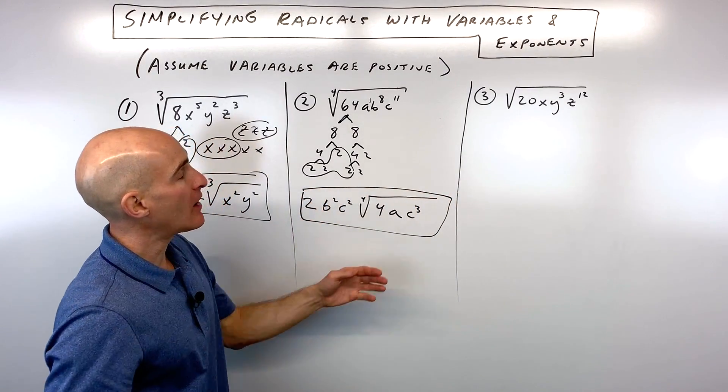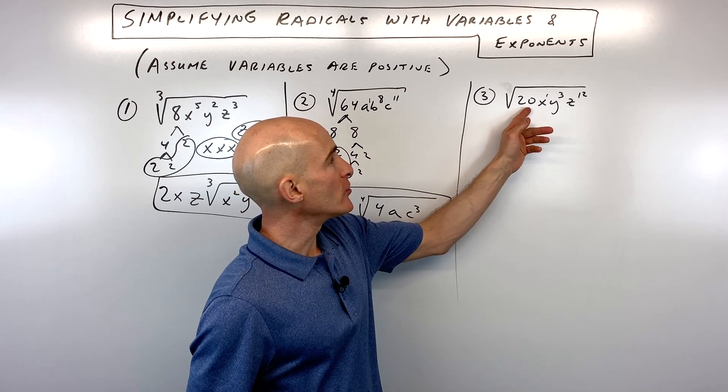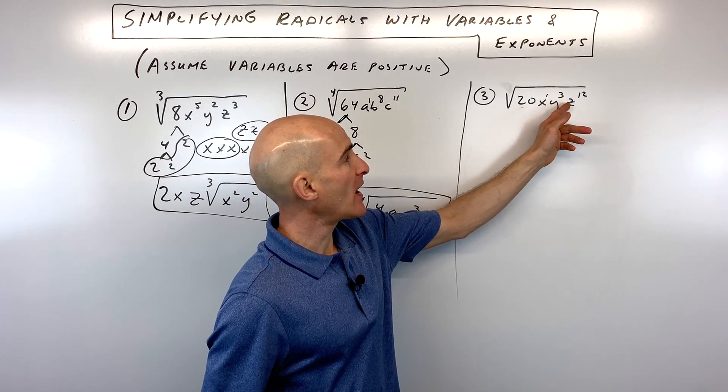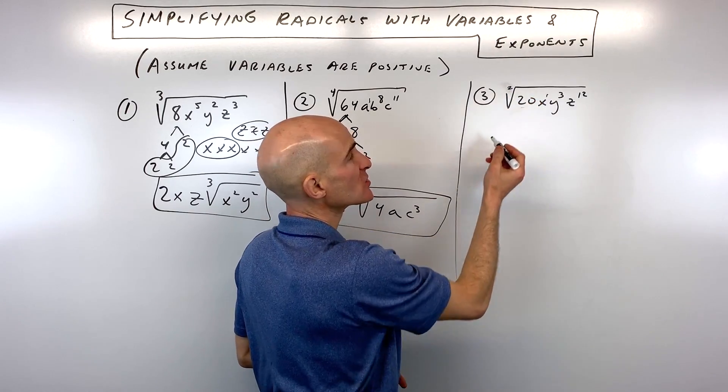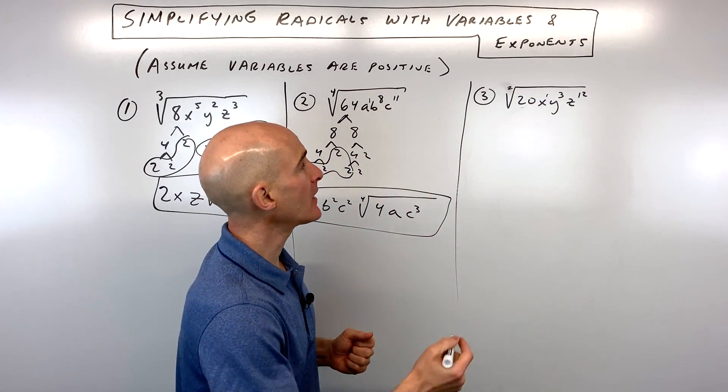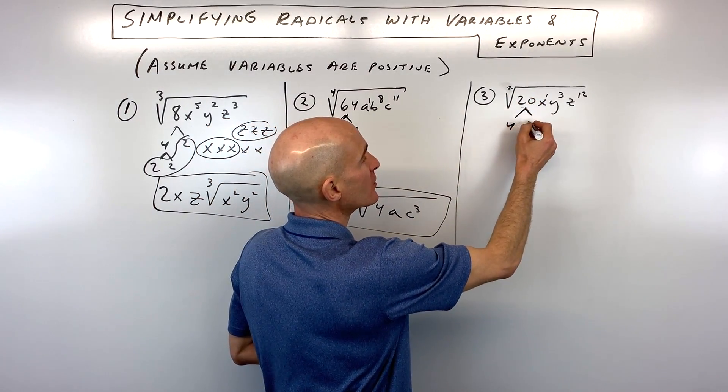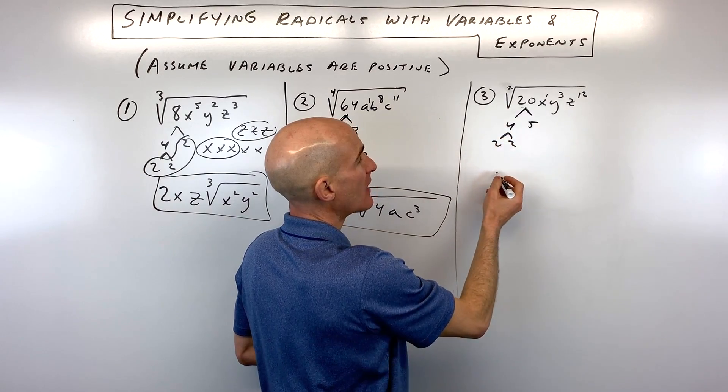So let's look at the last example now. Number 3 here, we're taking the square root of 20x to the 1st, y cubed, z to the 12th. Now, if you don't see a number up here, it's understood to be a square root, so you can put a 2 there if you'd like. But we're going to follow that same process. We're going to break down the number into its prime factors.